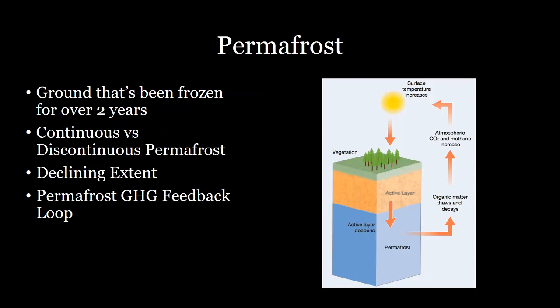Permafrost also has a positive feedback loop for more melting. We often consider permafrost a tipping point where you potentially could have melting that is a self-perpetuating system for even more melting. Because as you melt permafrost, more organic matter is able to decompose and form carbon dioxide and methane that gets released into the atmosphere. Those are greenhouse gases that can contribute to more warming, and therefore more melting of the permafrost and more release of gases — a vicious cycle of more and more melting because of the release of CO2 and methane.